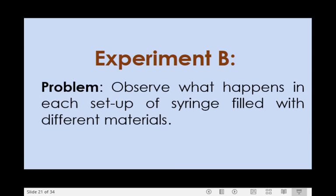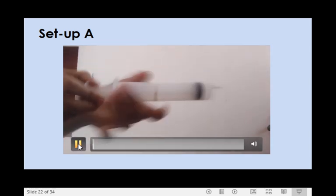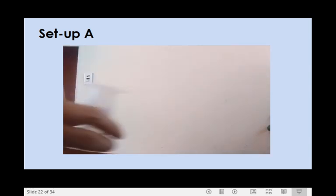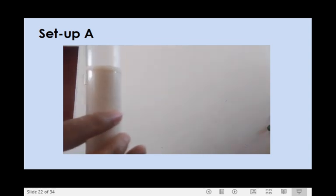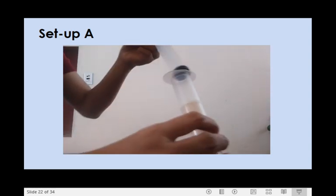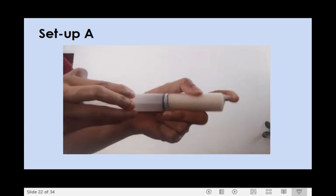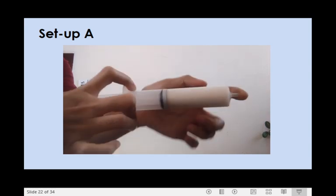For experiment B, you have to observe what happens in each setup of syringe filled with different materials. For setup A, fill the syringe with salt or water up to 30 ml of the syringe. Cover tightly the tip of the syringe with your finger and use your other thumb to push the plunger once.